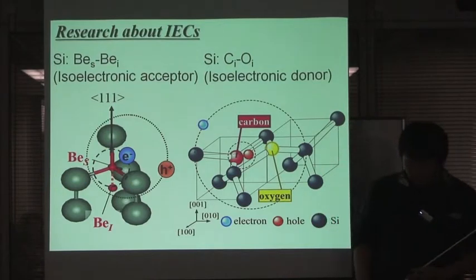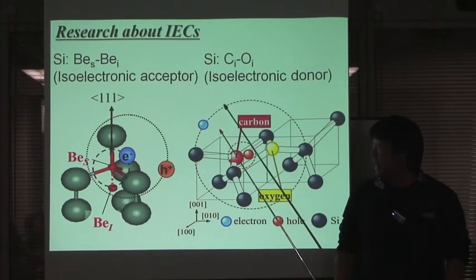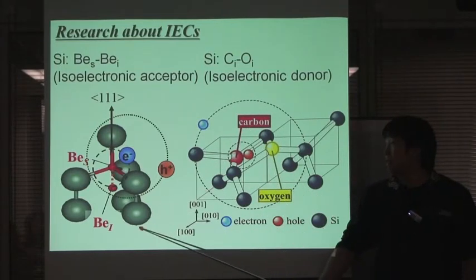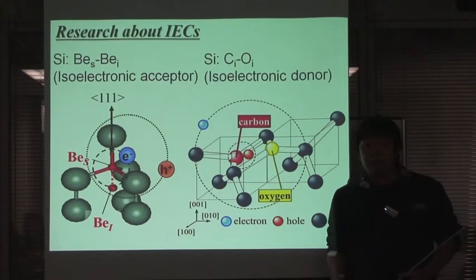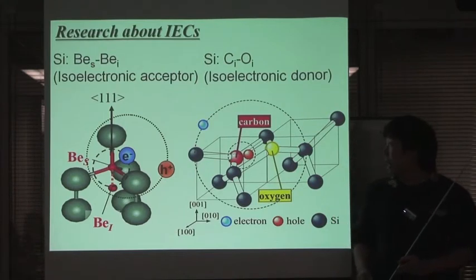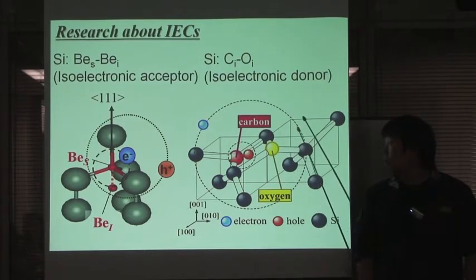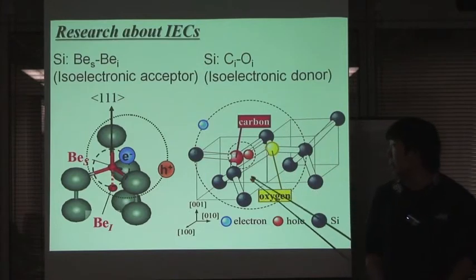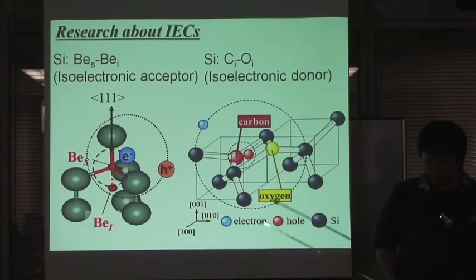So in this presentation, at the first topic, I will show the photoluminescence study of the barium pairs in silicon under the magnetic field. And at the second topic, I will also explain the optical properties of carbon-oxygen defects in silicon, especially luminescence from the triplet state of the exciton bound to interstitial carbon-interstitial oxygen defects in silicon.